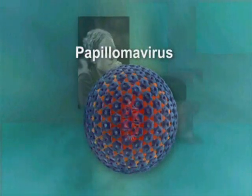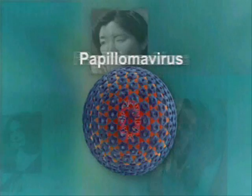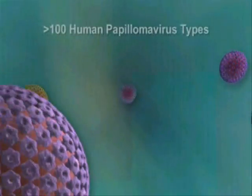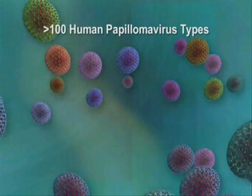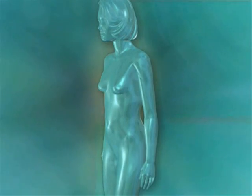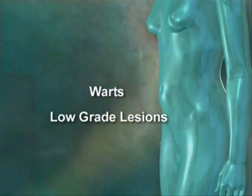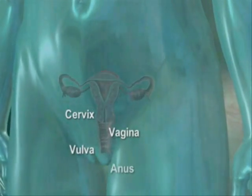Virtually all cases of cervical cancers are caused by human papillomaviruses, or HPV. More than 100 human papillomavirus types have been characterized. Although most anogenital HPV infections are transient and resolve spontaneously, they can also cause benign or malignant changes of the skin or inner lining of tissues, known as mucosa. These morphological changes range from warts and other low-grade lesions to invasive cancers of the cervix, vagina, vulva, and anus.